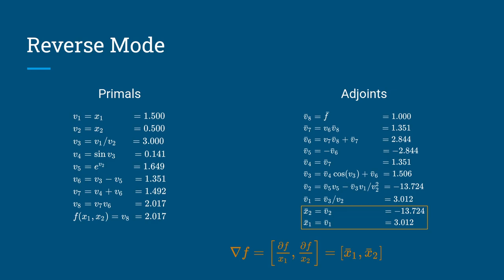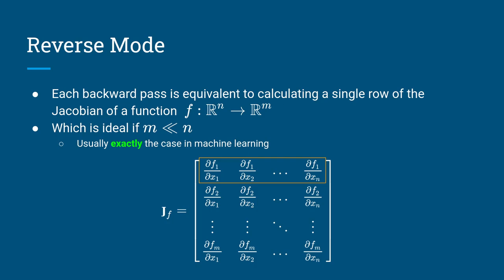If someone watching this has already implemented backpropagation, they will notice they are very similar — that's because reverse mode is a generalization of backpropagation. This shows that reverse mode is very useful when you have a lot more inputs than outputs, because at each backward pass this is equivalent to calculating a single row of the Jacobian, which is very useful in neural networks.